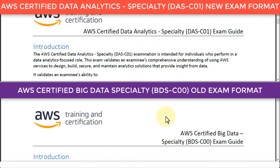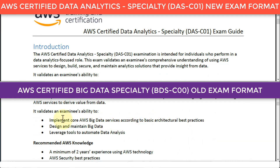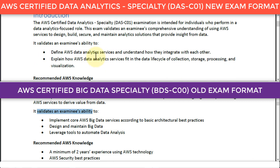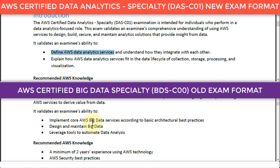Let's look at the old exam first. The old exam validated simply three bullet points, whereas the new exam on the top validates the ability to define analytic services, understand how they integrate with each other, and explain how AWS data analytics services fit in the data lifecycle of collection, storage, processing, and visualization. The old examination simply wanted you to learn how to implement core big data services, whereas in the new exam you need to define the data analytics services and explain how they fit into the actual lifecycle.